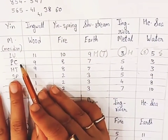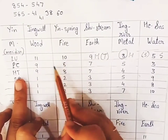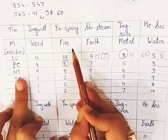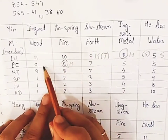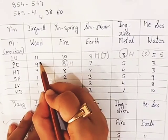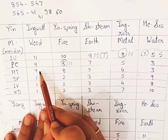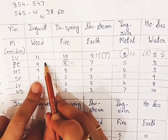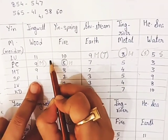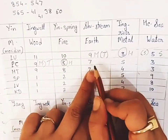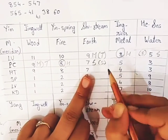The next is pericardium meridian, and the element here is fire. Pericardium 8 is the horary point because it is the fire point of pericardium meridian. We go one step previous to find the mother — the mother of fire is wood — so pericardium 9 is the mother point and tonification point. Pericardium 7 is the son point and sedation point.